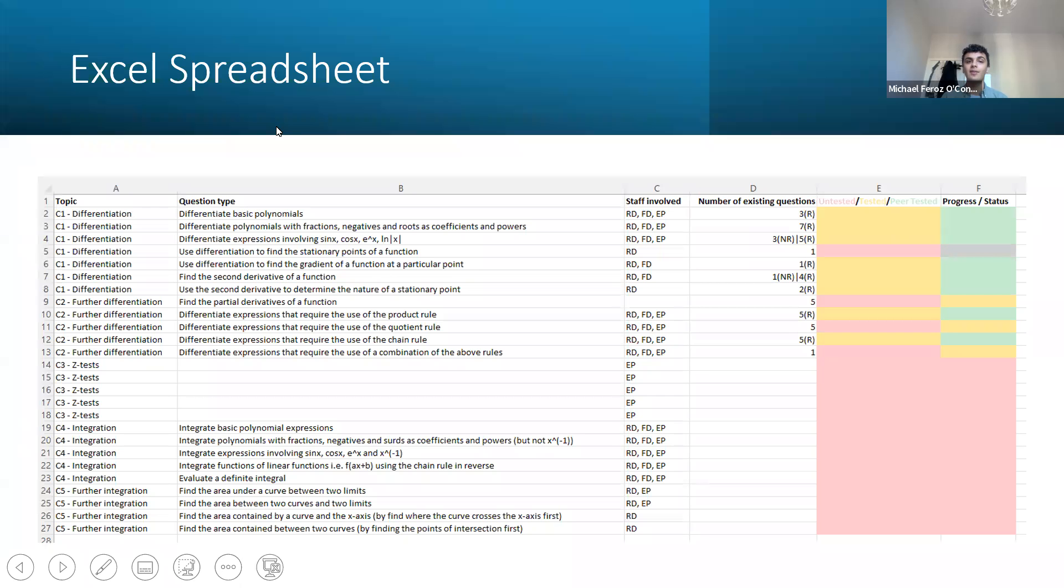We're also using an Excel spreadsheet to keep track of progress and testing of questions so that staff can see at a glance how we are getting on, an example of which can be seen on the slide. The hope is that each of these question packages will take us 10 hours in total, but that can vary depending on how many questions there already are in the NUMBAS platform and the difficulty of the questions.